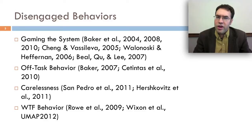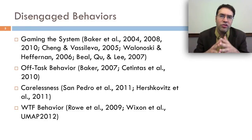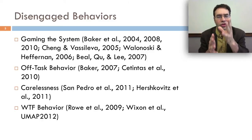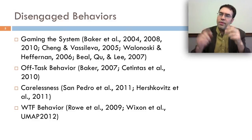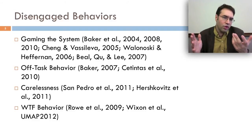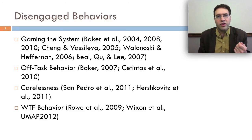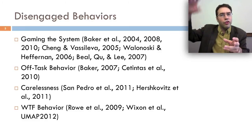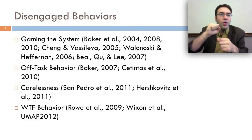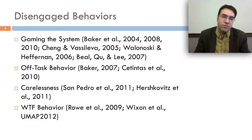And finally, what we call WTF behavior — which stands, of course, for "without thinking fastidiously" — consists of doing actions within the learning system that are not targeted towards the learning task. By contrast to off-task behavior, where the student disengages entirely, in WTF behavior the student is still working with the system but doing something unrelated. For example, a student who's supposed to be plotting points might draw a smiley face. Or in a virtual world, John Rowe, Jen Saborne, and James Lester have a nice example where students, instead of figuring out why people are dying of a disease, go to a virtual tree, climb it, get virtual bananas, and spend half an hour trying to flush them down a virtual toilet.